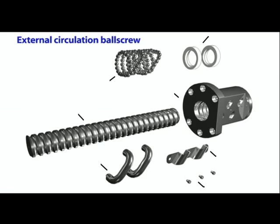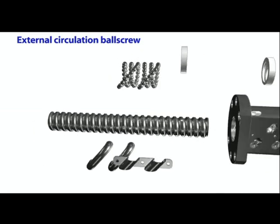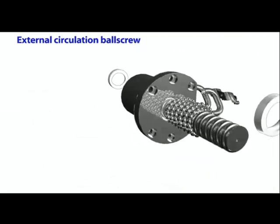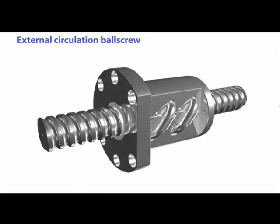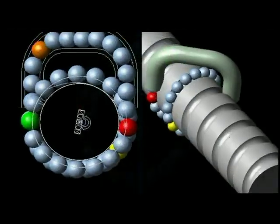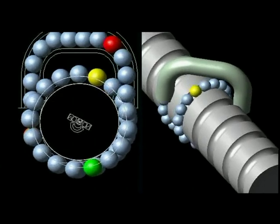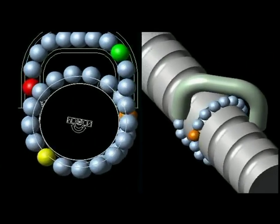External circulation ball screws consist of a screw, nuts, ball bearings, return tube, fixture block, and wipers. The bearings are located between the screw and the nut, and circulation is achieved using a return tube. As a result, the bearings return by way of the nut. Since the return tubes are located outside of the nut, this is known as an external circulation ball screw.